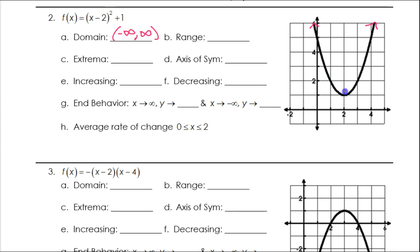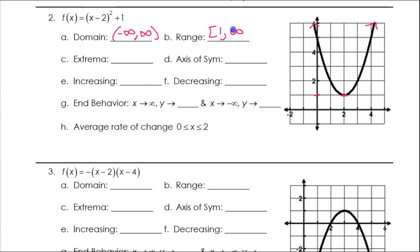Now the range is the y values, so always give it to me from bottom to top. The lowest value is here at 1, so it's going to start off at 1. And it goes up forever, so that's 1 to positive infinity. Use the square bracket on the 1 to show that the 1 is included — it starts at 1, it touches 1.